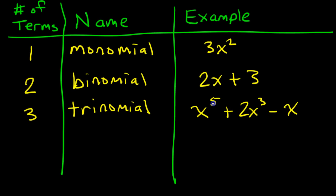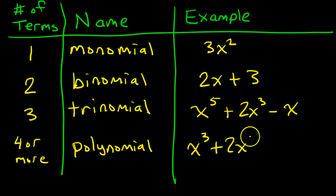Anyway, back to this. Anything over three terms, we just go with the general term polynomial. If it has four or more, we just go ahead and call it polynomial. For example, if I had x to the third power plus 2x squared minus x plus 7, that has four terms. We don't have a special word for it, so we just go with polynomial.